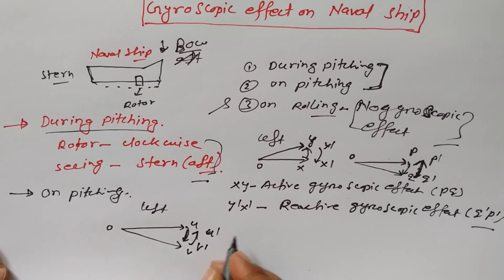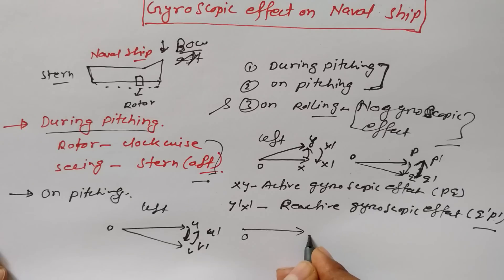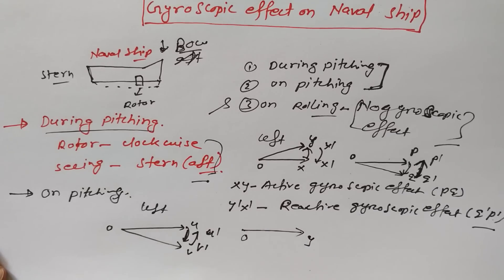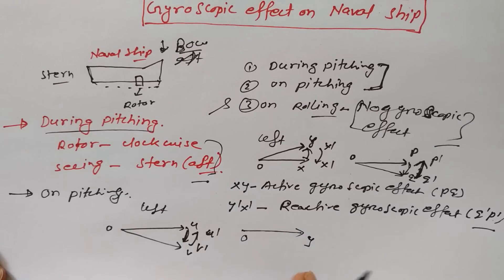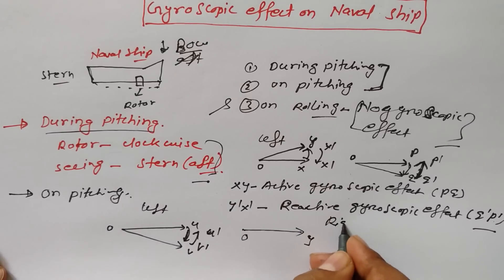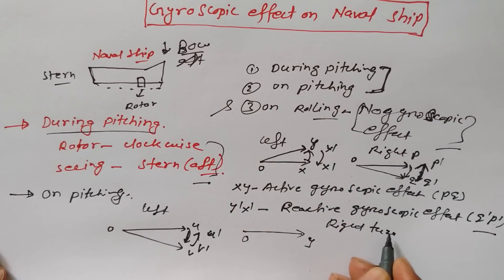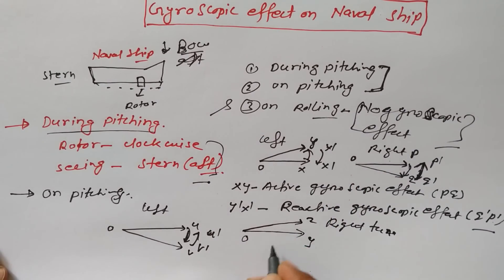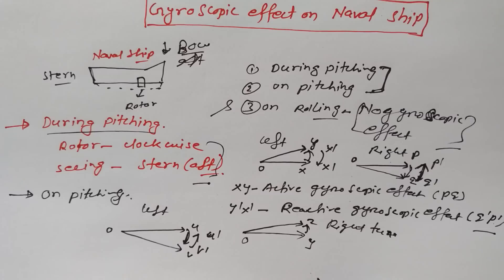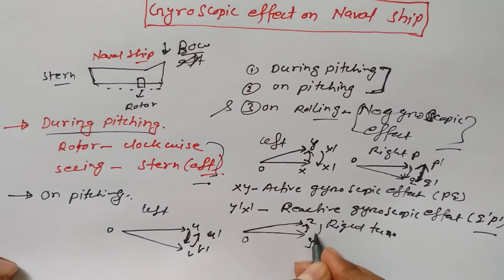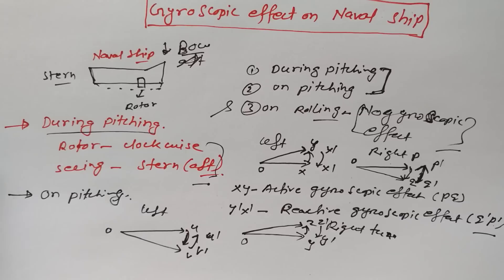If the naval ship will take a right turn, its momentum vector is OY. If it takes a right turn, the momentum vector will be changed to OZ. So the active gyroscopic effect would be YZ, and the reactive gyroscopic effect would be Z-dash to Y-dash.